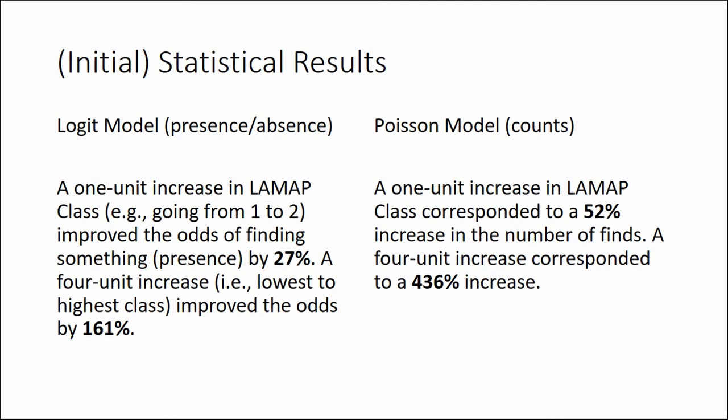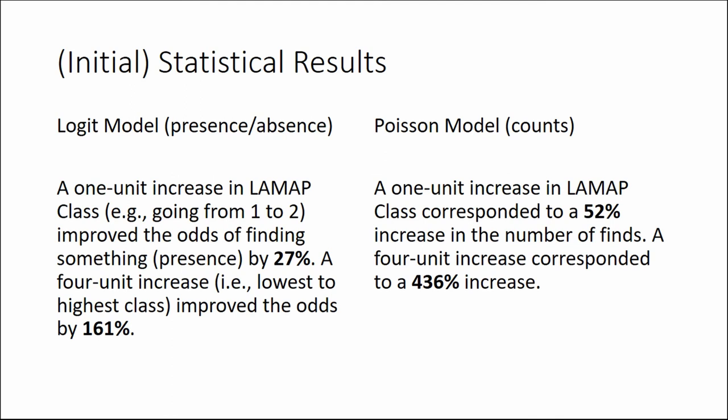One unit increase in LAMAP class in our territory showed a 27% higher chance of finding something in presence/absence terms. A four-unit increase would improve those odds by 161%. One unit increase in LAMAP class also corresponds to a 50% higher increase in the number of finds. Going into the field with this in hand would give us much better results for finding missing periods across a large territory.